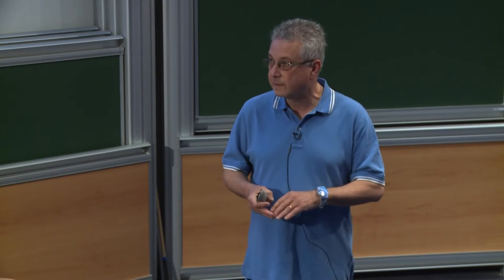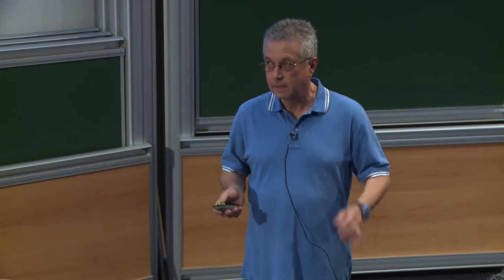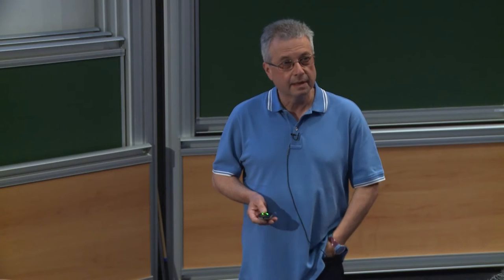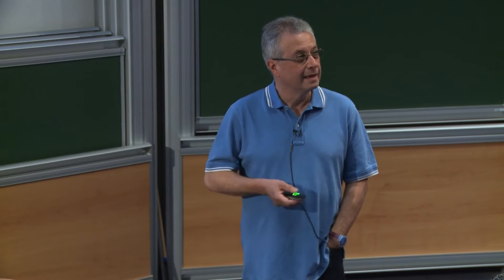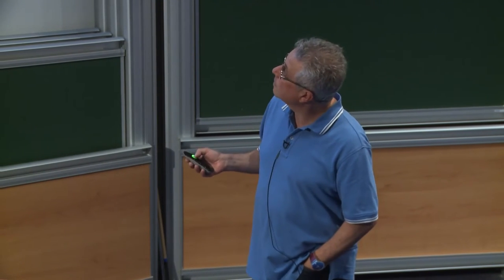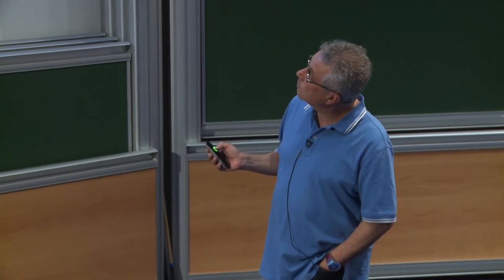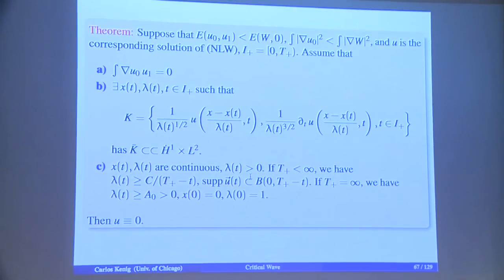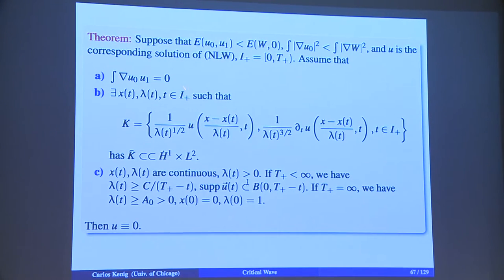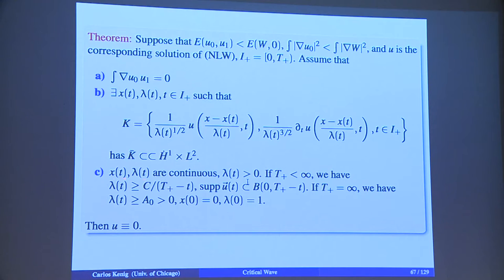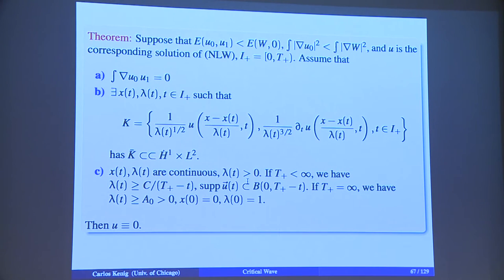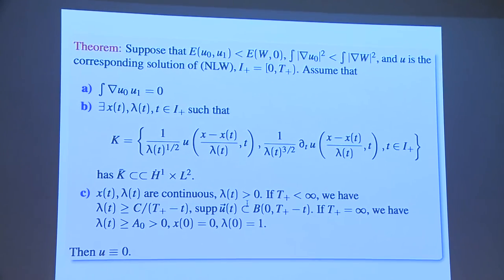After the preliminary discussion of further properties of critical elements, we see that the contradiction comes in this grand scheme from this theorem. The theorem says that if you have a solution below the energy of W, whose gradient is below that of W, which has momentum zero and has the compactness property, where X and lambda are continuous and lambda is positive, and if T plus is finite we have this lower bound and support property, and if T plus is infinite we can assume lambda is bounded from below, with X of zero equal zero and lambda of zero equal one — then U is zero. So this is a complicated description of the zero function.